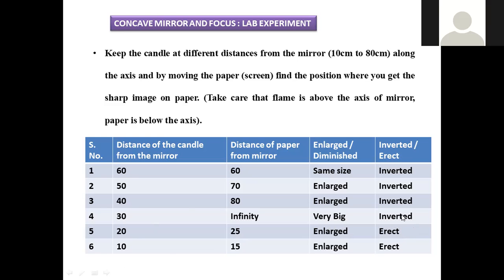An erect image is vertical — the same orientation as the object. When the candle is very near at 10 cm from the mirror and paper at 15 cm, an enlarged image is again observed and it is erect. These are the inferences drawn. With your own experience, you have to get these inferences by taking the mirror, paper, and candle, changing their positions to observe whether the image is larger or smaller, straight or inverted.